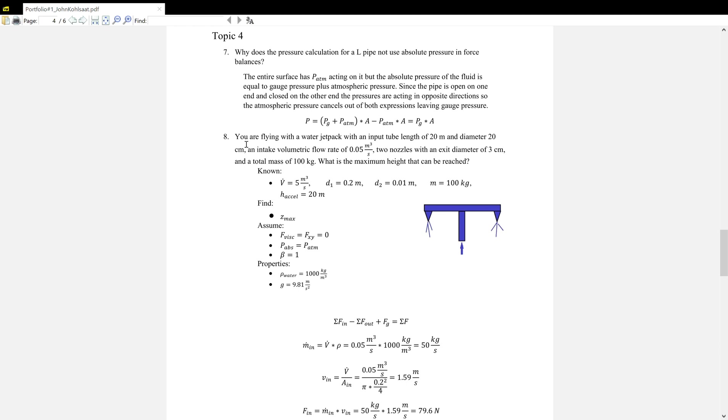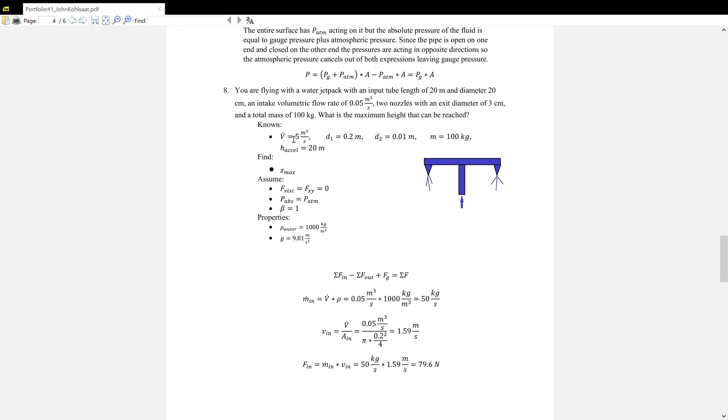Now, for number eight, you are flying with a water jetpack with an input tube length of 20 meters and a diameter of 20 centimeters, an intake volumetric flow rate of 0.05 meters cubed per second, and two nozzles with an exit diameter of 3 centimeters and a total mass of 100 kilograms. What is the maximum height that can be reached? So this is another problem we're given a lot. We're given the V dot into the system, the diameter into the system, the diameter out of the system, as well as the mass of the entire system and the height, the maximum height to which it can accelerate due to the 20 meter input tube length.